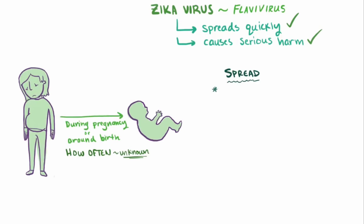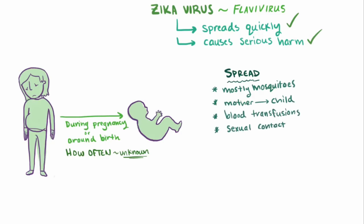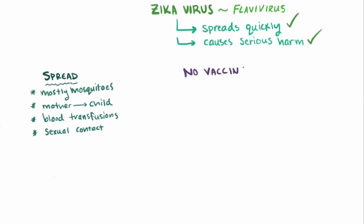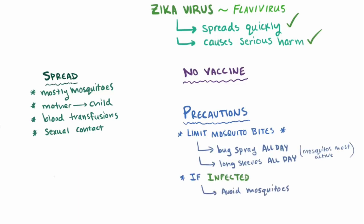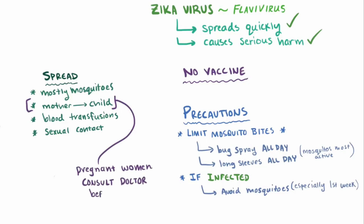In addition to being spread mostly by mosquito bites, and in some cases from mother to child, Zika virus has also been reported to spread through both blood transfusions and sexual contact. Currently there's no vaccine for the Zika virus, so it's highly advised to take precautions against traveling to areas of outbreak — mostly limiting mosquito bites by wearing bug spray all day or wearing long-sleeved shirts and pants, especially during the day when the Aedes mosquitoes are most active. If infected, it's especially important to avoid mosquitoes to avoid spreading Zika virus to others, especially in that first week of symptoms. The World Health Organization currently suggests pregnant women consult their doctor or travel clinic for guidance and recommendations.